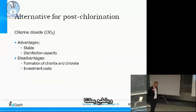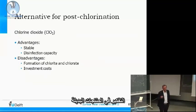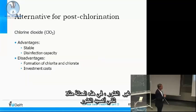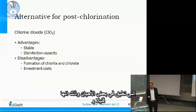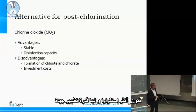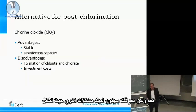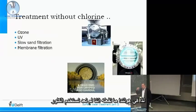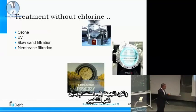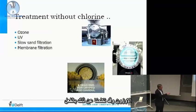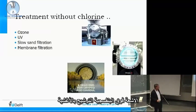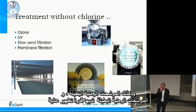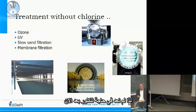There are also alternative products to chlorine. Chlorine dioxide is sometimes applied — it is a little more stable and has good disinfection capacity, but it forms chlorite and chlorate. In the Netherlands, we don't use chlorine anymore; instead we use alternative disinfection methods: ozone, UV, membranes, and slow sand filters. Slow sand filters have a high disinfection capacity, so we don't have the need for chlorine.